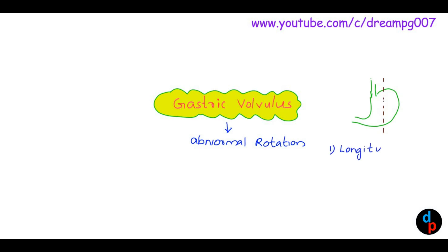As we can see, there is a longitudinal axis in the stomach. It is called organo-axial. And there is a perpendicular axis. It is called misandro-axial.